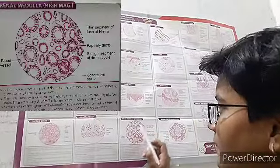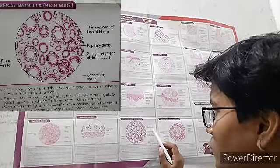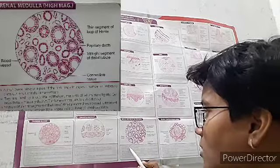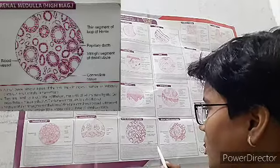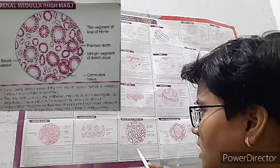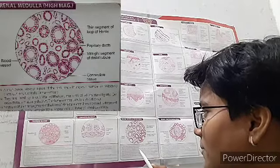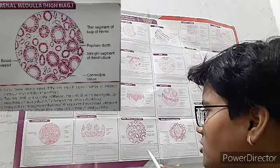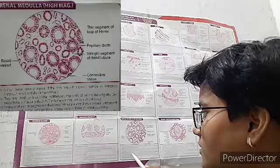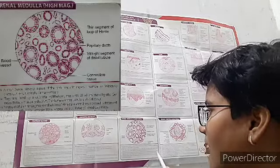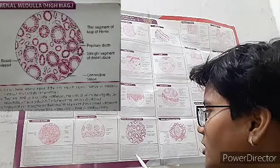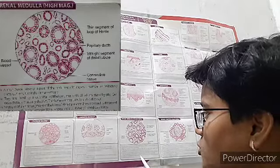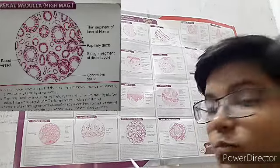Now the renal medulla at high magnification. Visible structures include blood vessels, thin segment of loop of Henle, papillary duct, straight segment of distal tubule, and connective tissue. A high-powered view shows collecting ducts cut longitudinally or transversely, lined by cuboidal epithelium with lightly staining cells and distinct cell boundaries. Sections of thin segments of the loop of Henle are seen, lined by cuboidal epithelium very similar in appearance to blood capillaries. Sections through thick segments of the loop of Henle are also seen, lined by cuboidal epithelium.